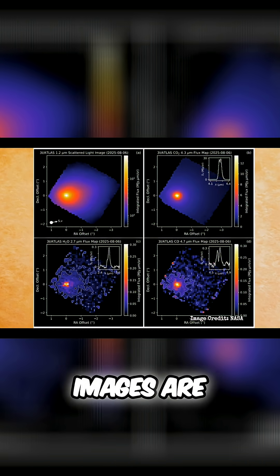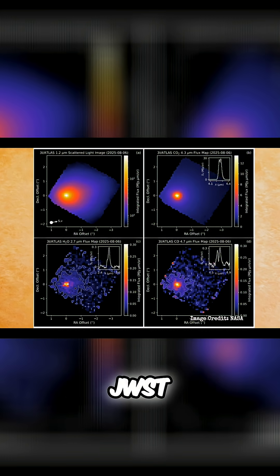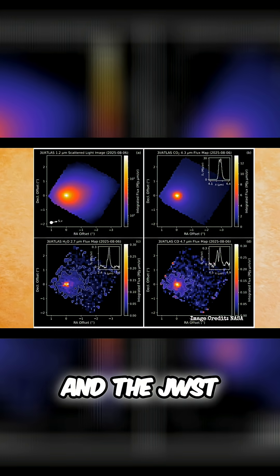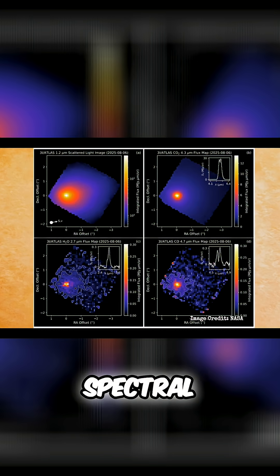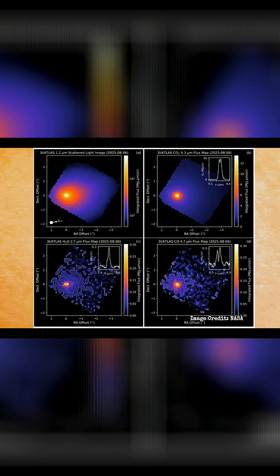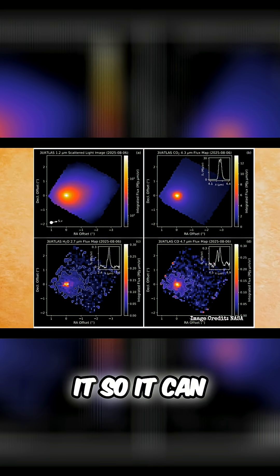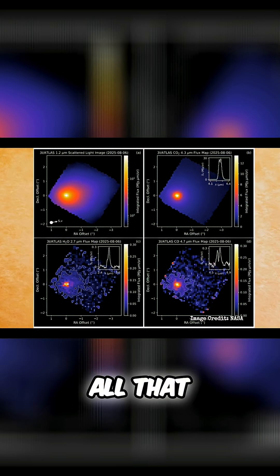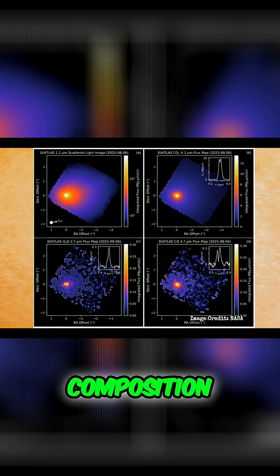But these images are actually from the JWST. And the JWST has these spectral telescopes and cameras on it. So it can look at things like the infrared spectrum and all that. So it's really good for figuring out the composition of things.